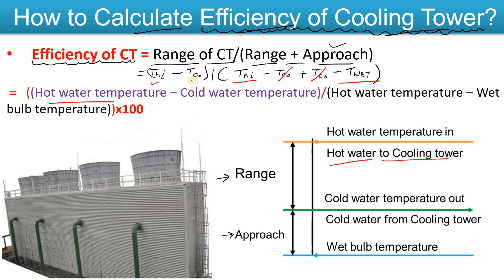So the final formula for cooling tower efficiency is: (T_hi minus T_co) — which is also known as the range of the cooling tower — divided by (T_hi minus T_wbt), multiplied by 100. This gives you the efficiency of the cooling tower as a percentage.